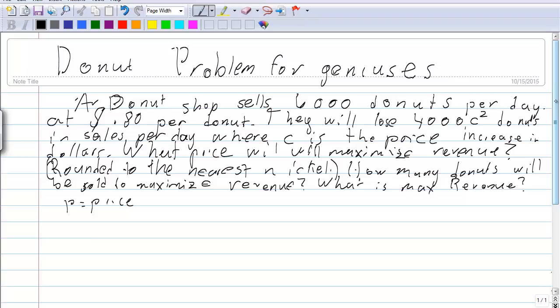The Donut Problem for Geniuses. A donut shop sells 6,000 donuts per day at $0.80 per donut. They will lose 4,000 C-squared donuts in sales per day where C is the price increase in dollars.